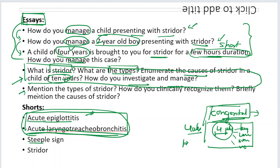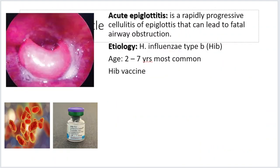The last essay question is: what are the types of stridor, clinically recognize them, and what are the causes of stridor — that is mostly a theoretical question. The other three questions reflect real-life situations. So much importance is being given to acute epiglottitis — three essays have been asked — so the examiner is likely focusing on this.